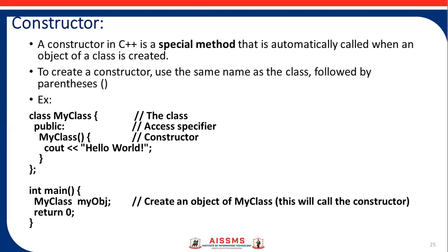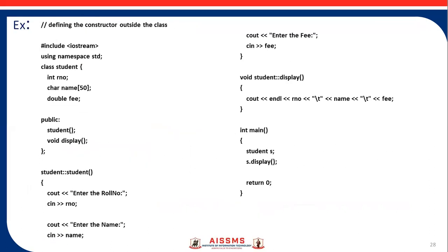Using cout we display the output 'Hello World'. The main function is most important because without it we can't execute the program. We create an object of MyClass named myObj, and through this object we can access the class functions and attributes. Return 0 is necessary because the main method's return type is integer.